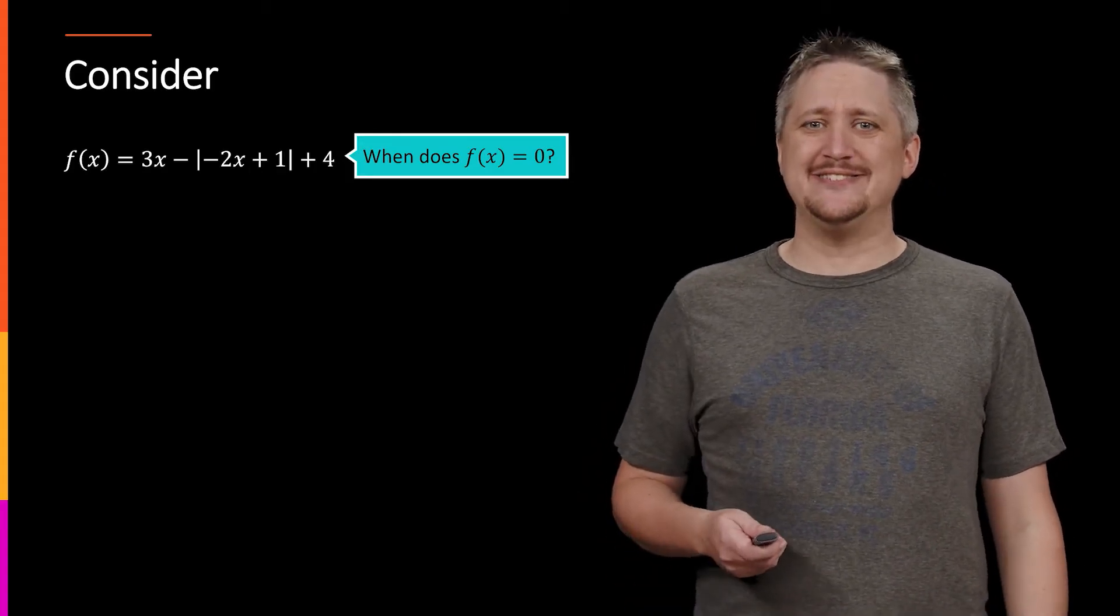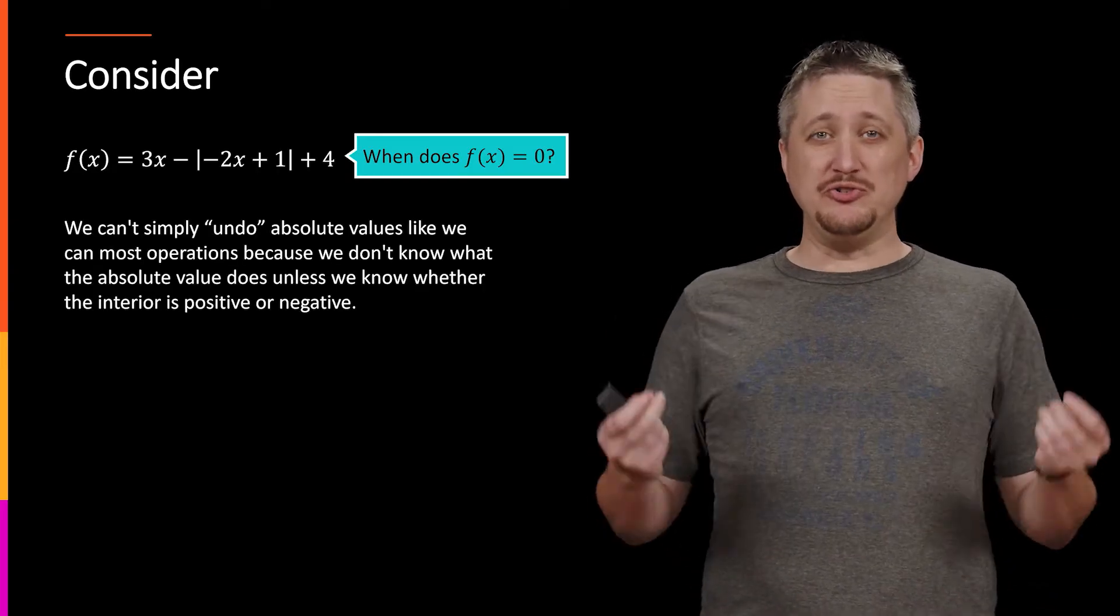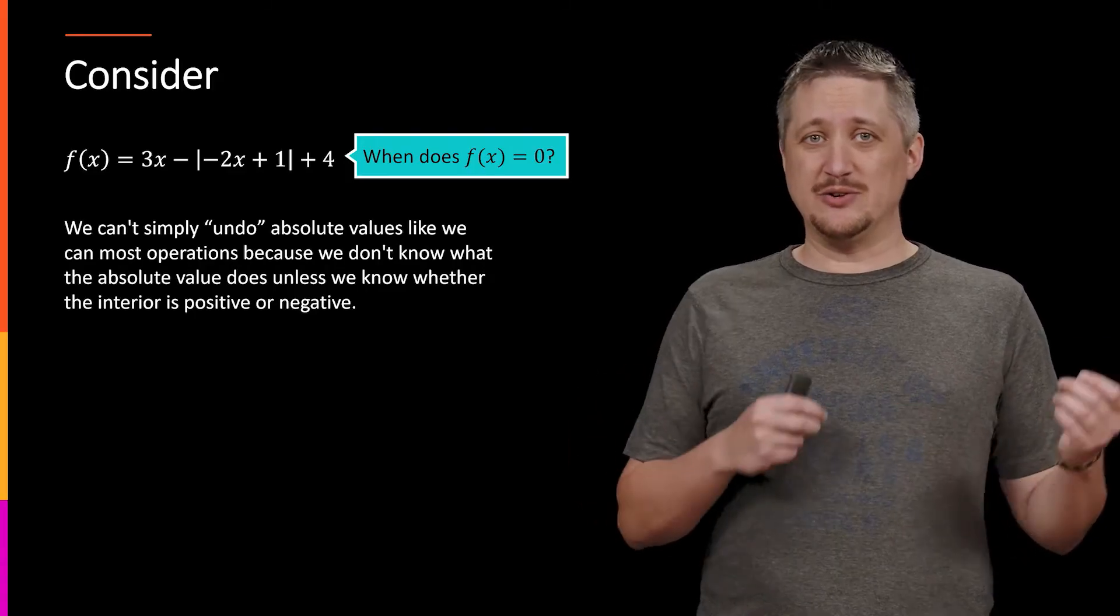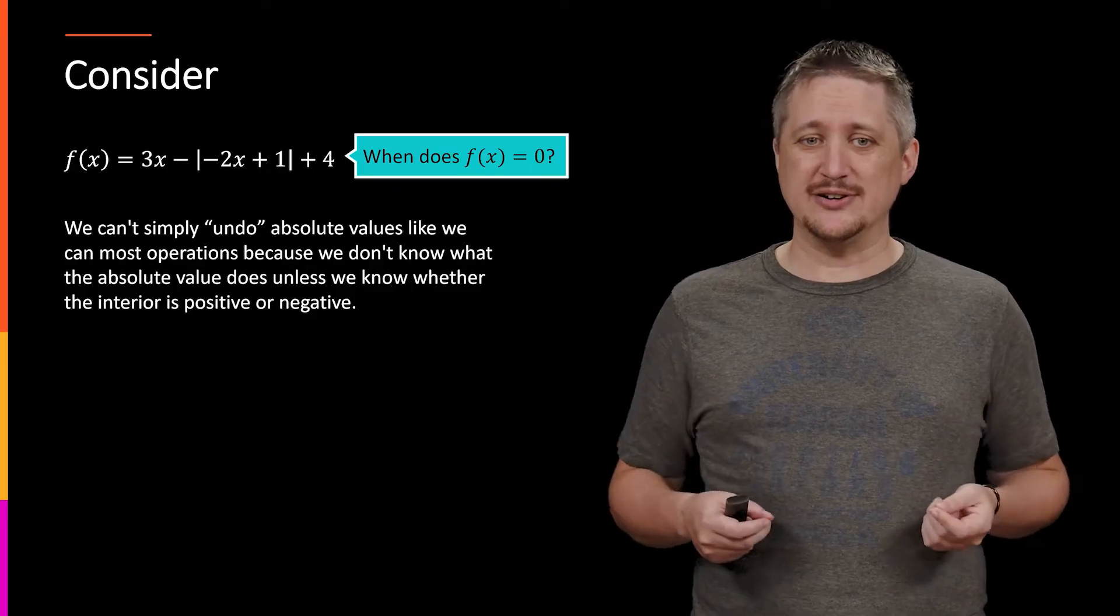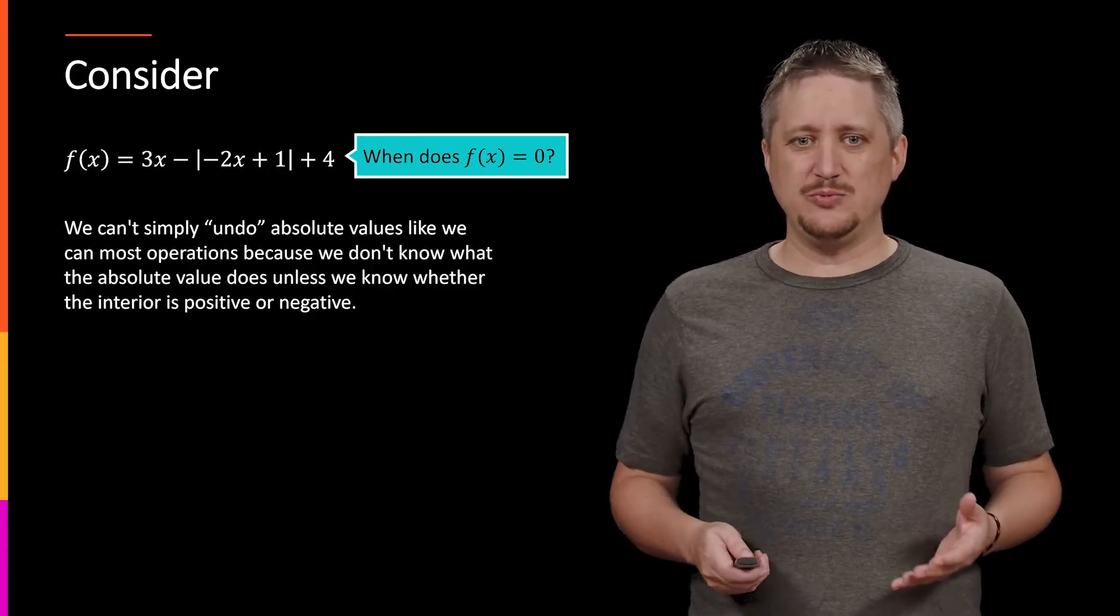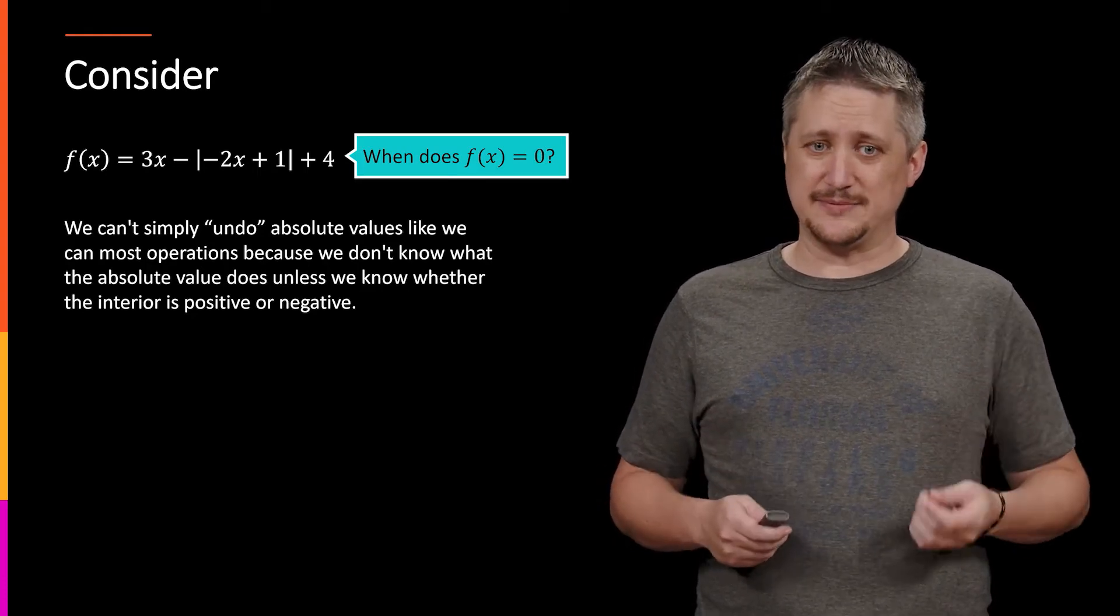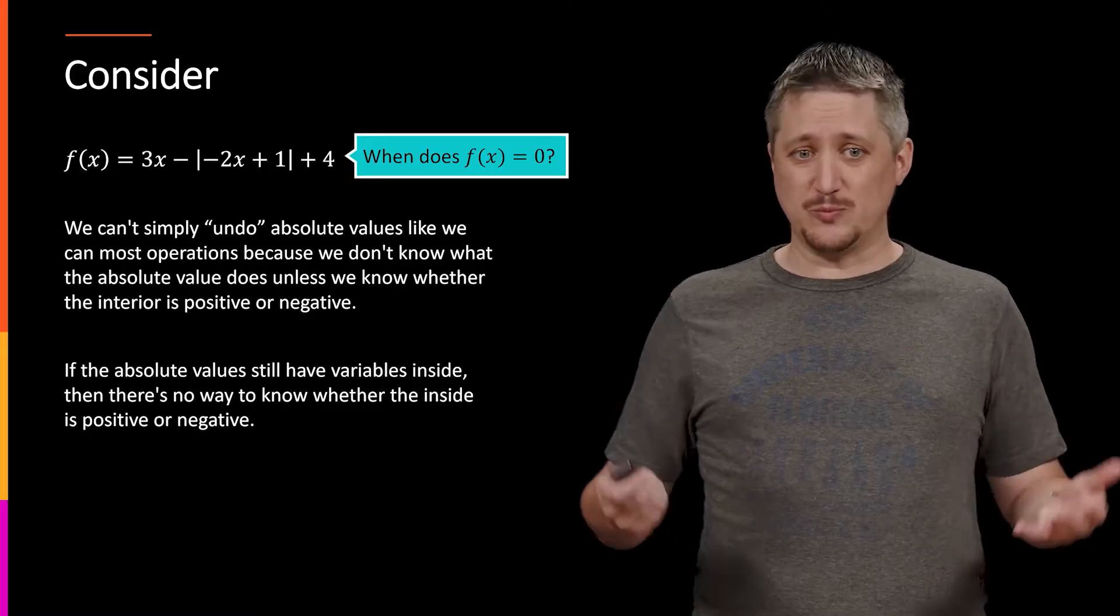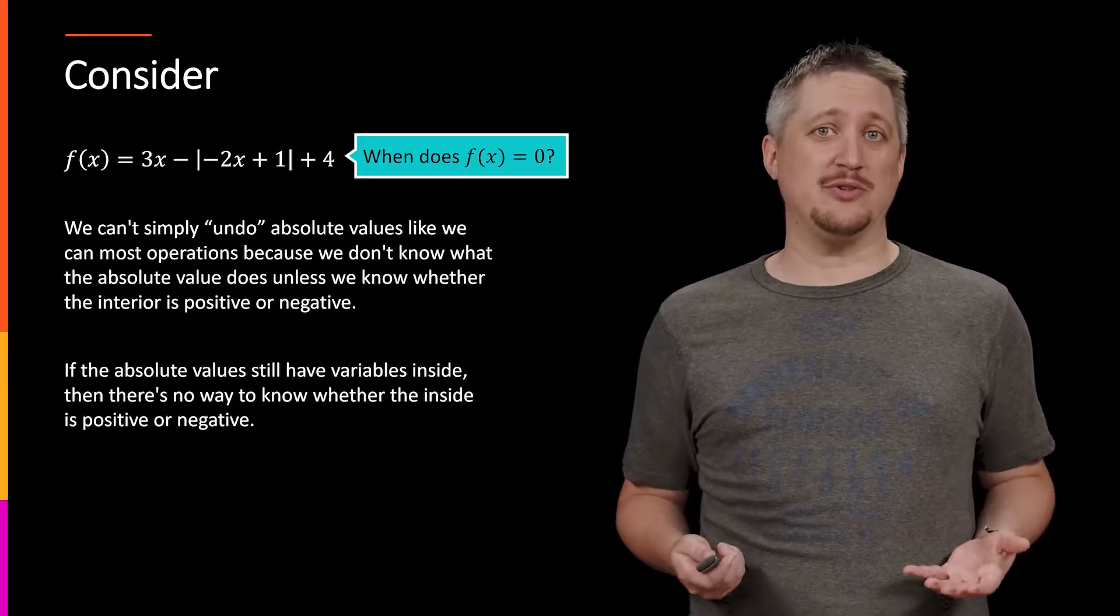Unfortunately, this is deceptively difficult here, because we can't simply undo absolute value. Normally, we would set this whole thing equal to 0 and start moving stuff around and undoing operations to try to isolate x and get an answer. But we can't do that with absolute value, because with absolute value, we don't know whether the interior is positive or negative when there's still an x in there.